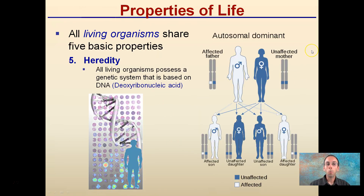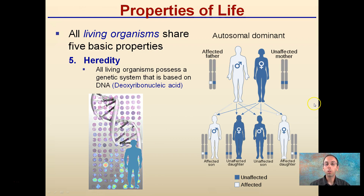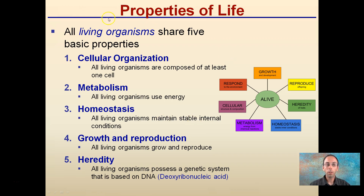Lastly, all living organisms possess genetic material based on DNA — deoxyribonucleic acid. This is how we inherit certain genes from our mom or our dad. Through the passing down of DNA, we're able to track inherited traits, and it essentially makes us who we are.